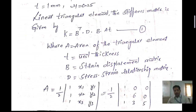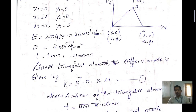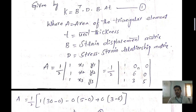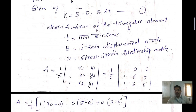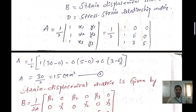The area A = (1/2)|1 x1 y1; 1 x2 y2; 1 x3 y3|. Substituting: x1=0, y1=0; x2=6, y2=0; x3=3, y3=5. Expanding the determinant: (1/2)[1×(6×5 − 0×3) − 0 + 0] = (1/2)×30 = 15 mm². This is equation number 2.